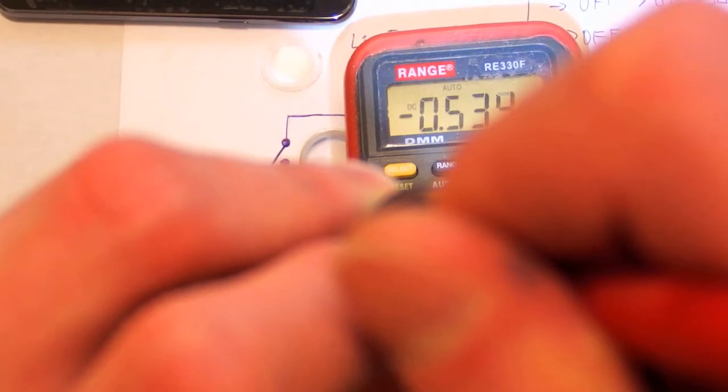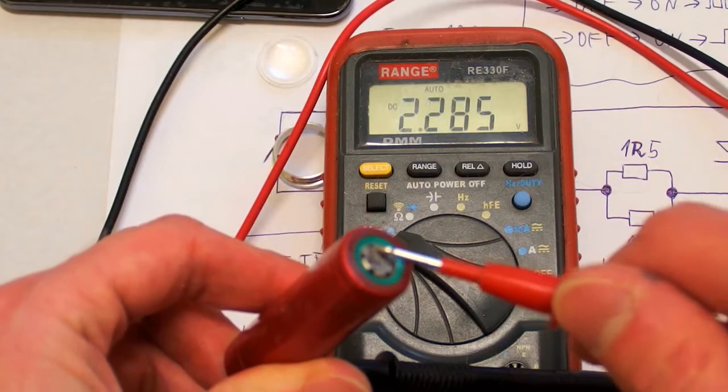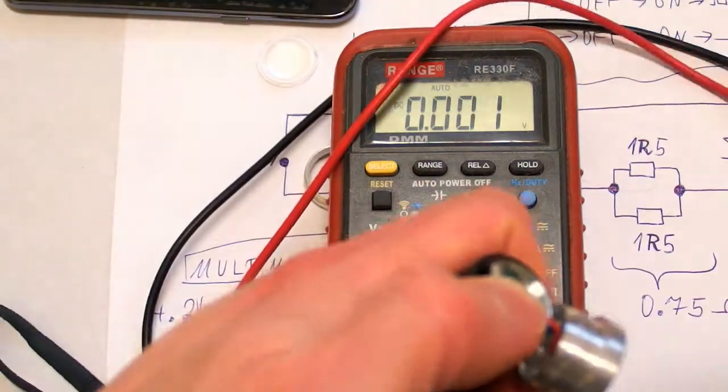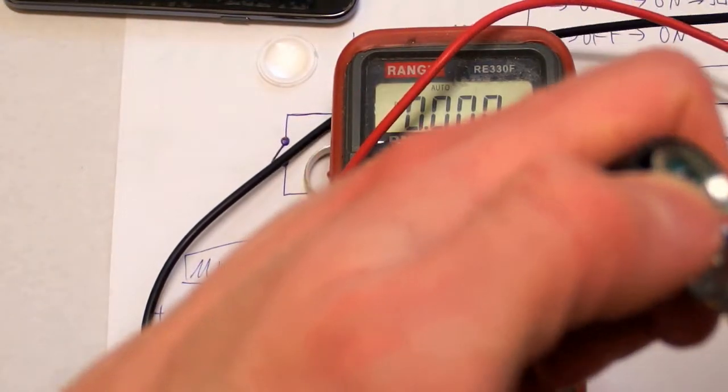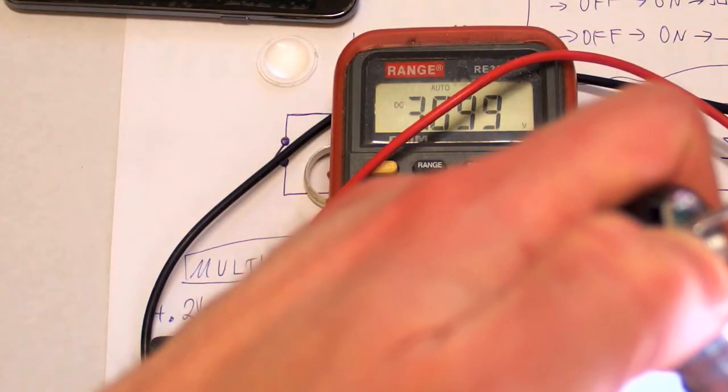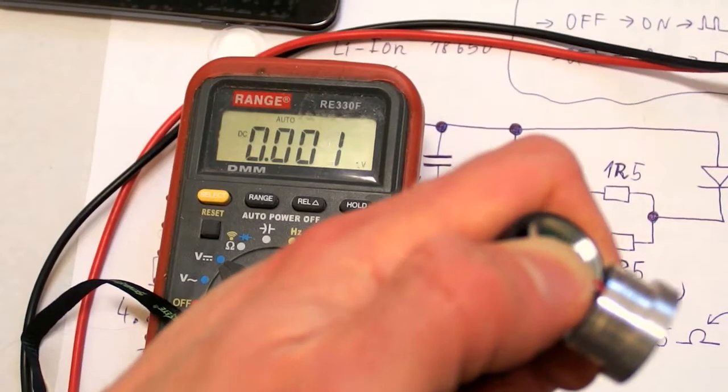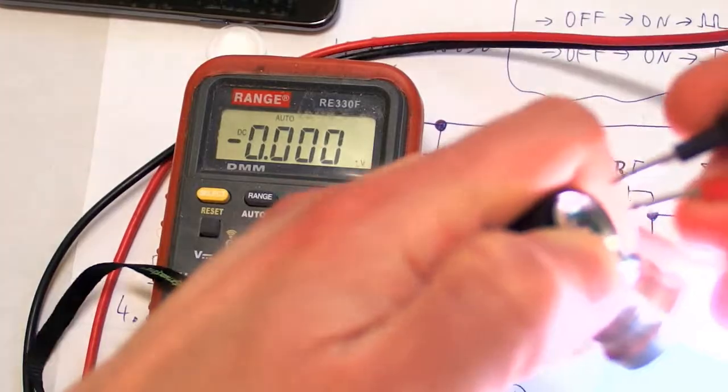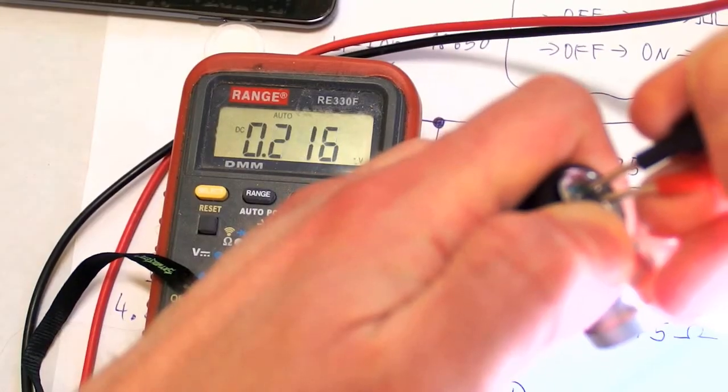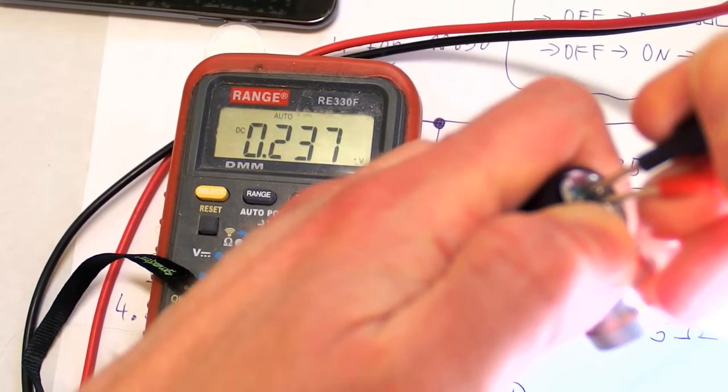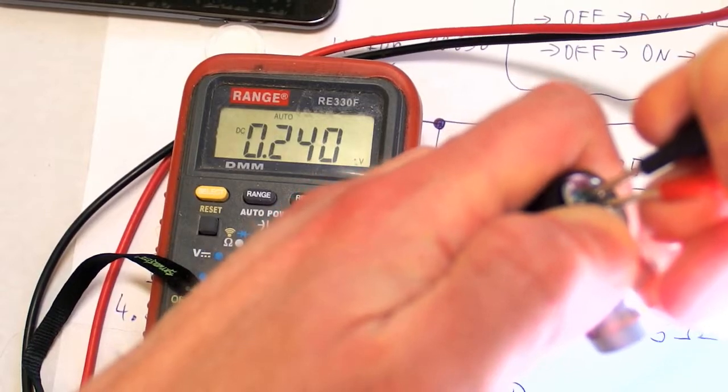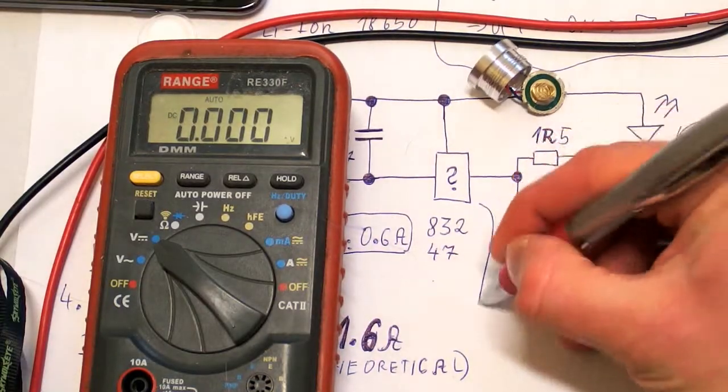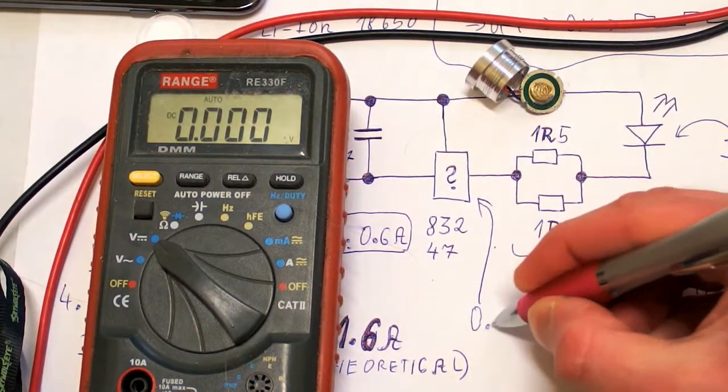0.53 volts. And this is still with almost full battery. And now let's try to measure the voltage of the LED: 3.1 volts. And the chip is also going to have some voltage drop across it. So let's try to measure it. And it's about 0.24 volts. So the voltage drop of the chip is 0.24.